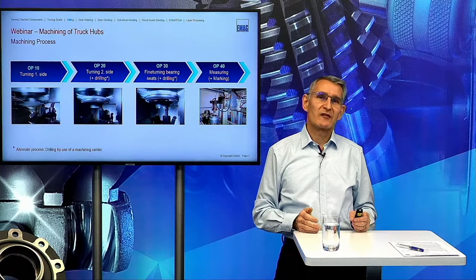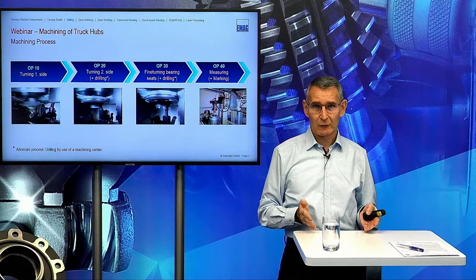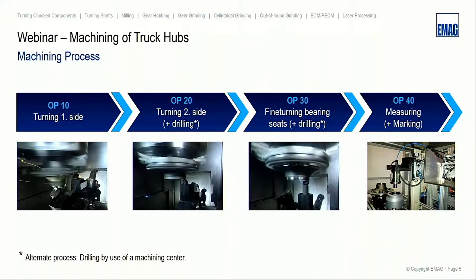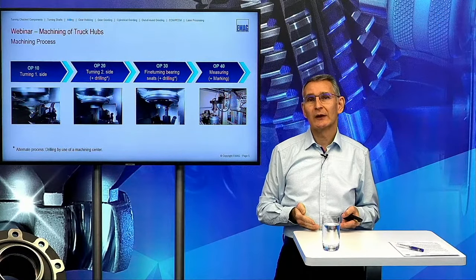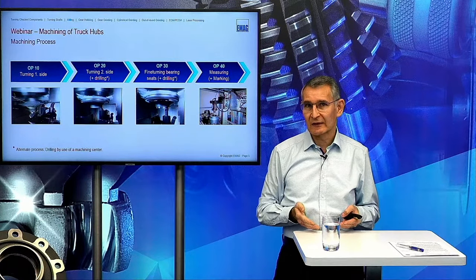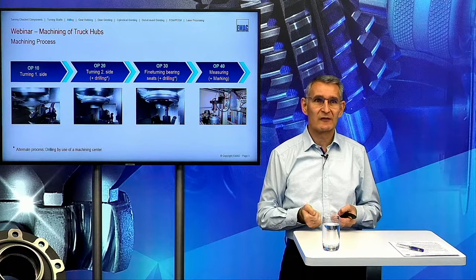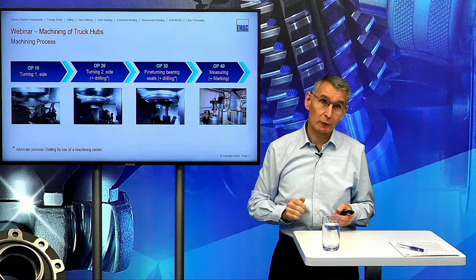Now the machining process itself. Typically we have three setups to machine the part. First setup is OP10 — we are turning the first side, rough turning and some finish turning. Then we swivel the part 180 degrees to the second spindle for OP20, doing rough and finish turning of the second side, and if required, also drilling. In the third setup, OP30, we do fine turning especially of the bearing diameters inside, and all geometrical areas that must share the same tolerances and reference as the inner diameters.